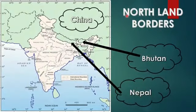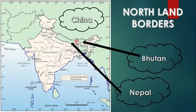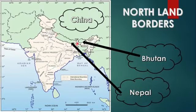There are three border countries in the north. First is China — its border starts from here till Uttarakhand and here in Arunachal Pradesh. Next is Bhutan, which has borders with Sikkim, Assam, and Arunachal Pradesh. The third northern country is Nepal, whose border touches Uttarakhand, Uttar Pradesh, Bihar, and Sikkim.